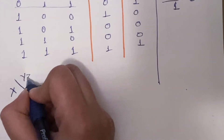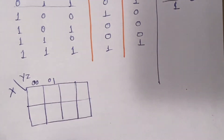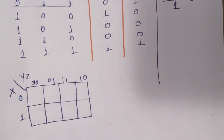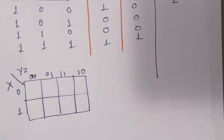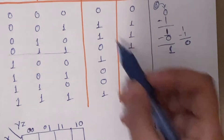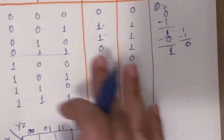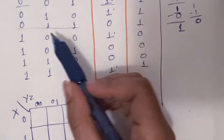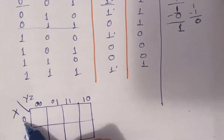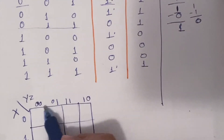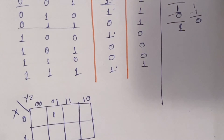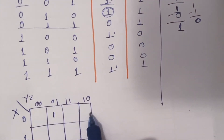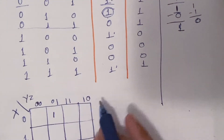The K-map axes are x and yz, with yz values 00, 01, 11, 10. We check where D equals 1 — there are four ones. For the first 1: x=0, yz=01; we place a 1 at that cell. For the next 1: x=0, yz=10; we place a 1 there. Since there are no adjacent pairs, we must take each 1 individually.